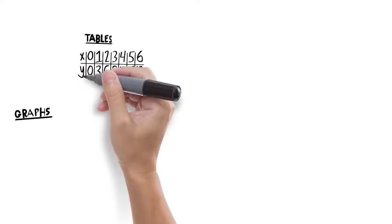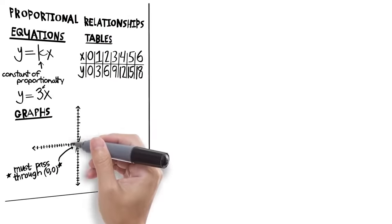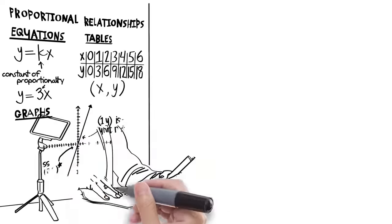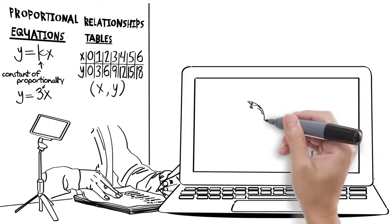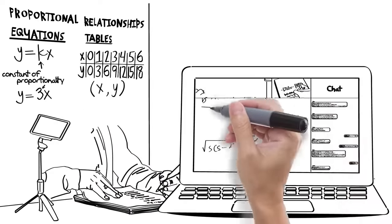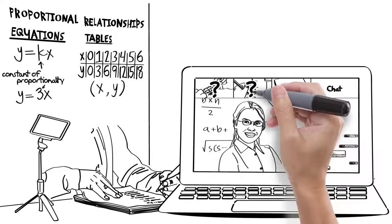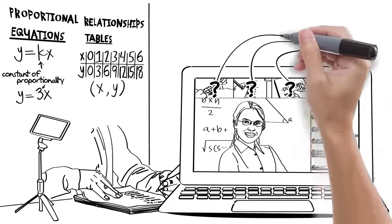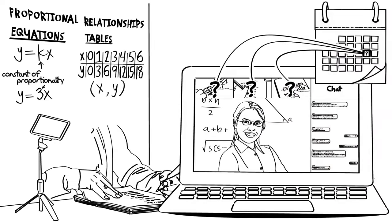Next is math, and the class reviews some proportional relationship problems from the previous day. Mrs. Chen watches them work while giving individual feedback using Zoom chat. At the end of class, everyone answers a few questions, which helps Mrs. Chen tailor the next day's lesson to their understanding.